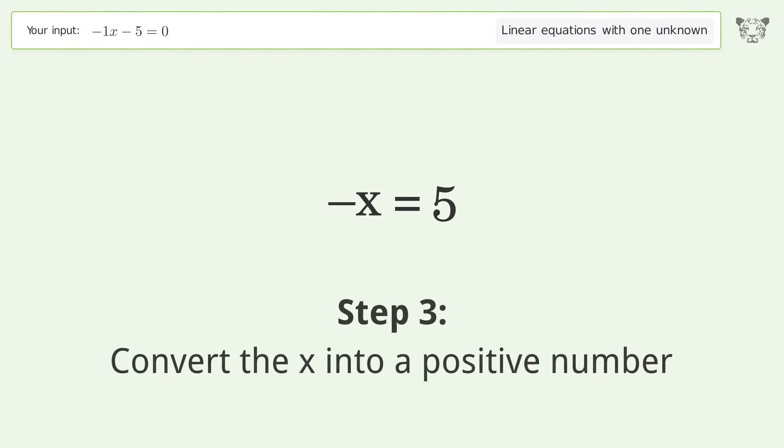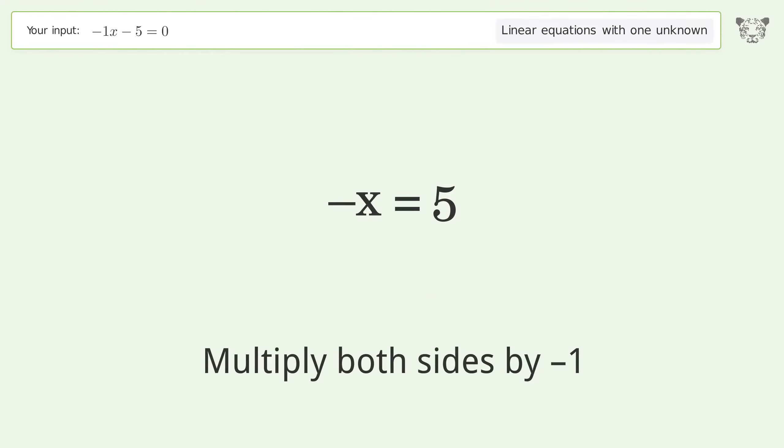Convert the x into a positive number. Multiply both sides by negative 1. Remove the ones. Simplify the arithmetic.